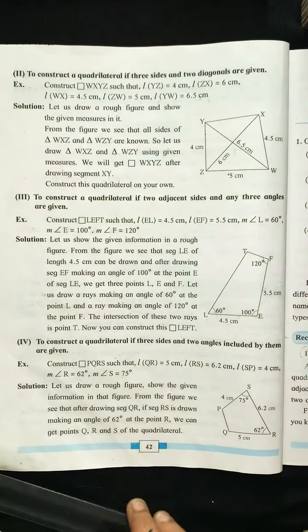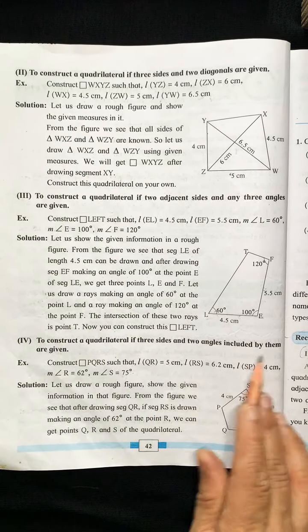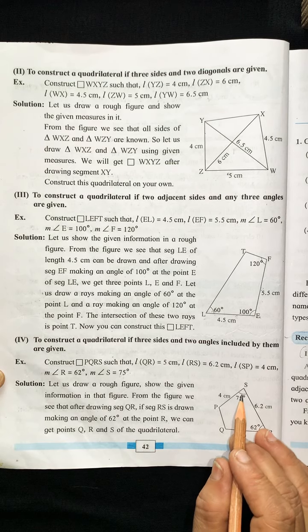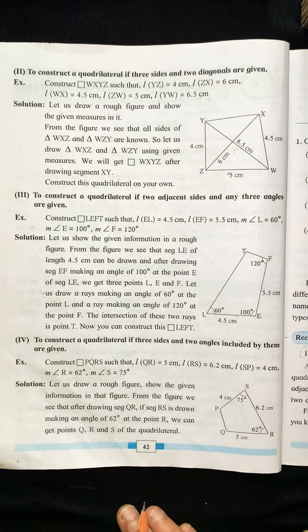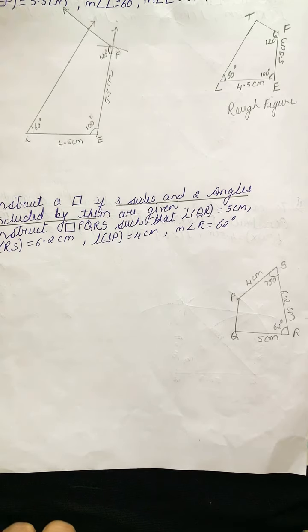Now let us go to the fourth type of construction: to construct a quadrilateral if three sides and two angles included by them are given. Here three sides and the two angles — angle S = 75° and angle R = 62° — are included between the sides. They are called included angles. We will see how to construct this. QR = 5 cm, SR = 6.2 cm, PS = 4 cm, angle R = 62°, and angle S = 75°.